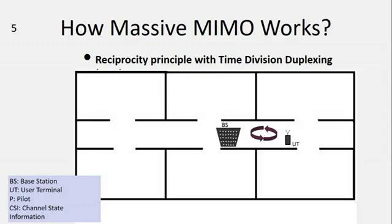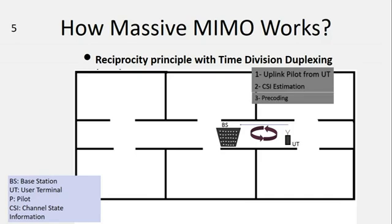How massive MIMO works: we introduce the time division duplexing reciprocity principle. First, the user uploads their pilot, which should be orthogonal among users and known at both base station and user terminal. Second, channel state information estimation takes place at the base station. In massive MIMO we use a linear estimator. Third, the base station can now pre-code the symbol vector to the user terminal using the channel state information that was already estimated.